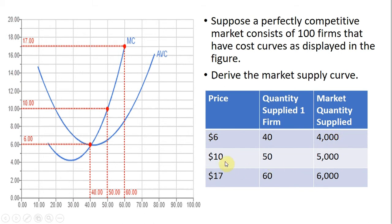Likewise, at a price of $10, we have 100 firms each producing 50. The total quantity supplied in the market will be 100 times 50 or 5,000 units.